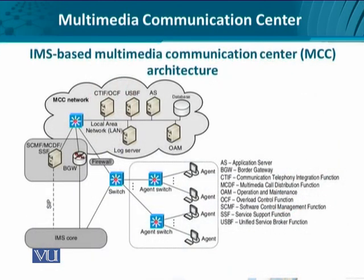Let's look at the complete end-to-end deployment scenario of the MCC as a network. We see here that we have different servers, each with its own functionality. We have the application server, the unified service broker function that identifies the nature of service a customer is looking for and returns the addressing information through which a customer can reach the appropriate server. There is also the log server that maintains all transactions taking place over this network, and the communication telephony integration function which provides multimedia telephony like voice over IP, video over IP, and multimedia messaging.